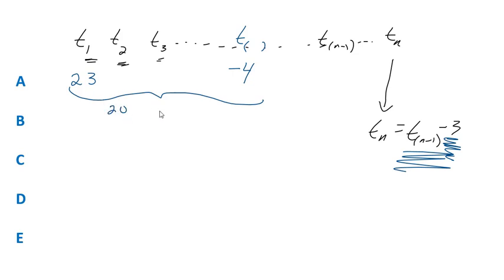T sub 2 would be 20, t sub 3, 17, t sub 4, 14, t sub 5, 11, t sub 6, 8, t sub 7, 5, t sub 8, 2, t sub 9, negative 1, t sub 10, negative 4.